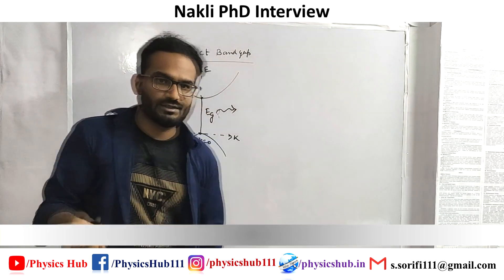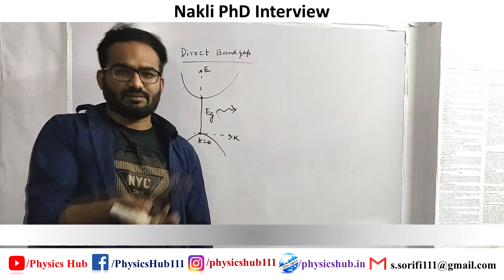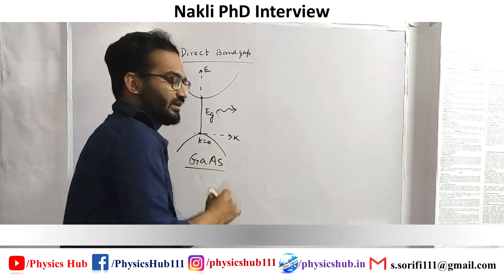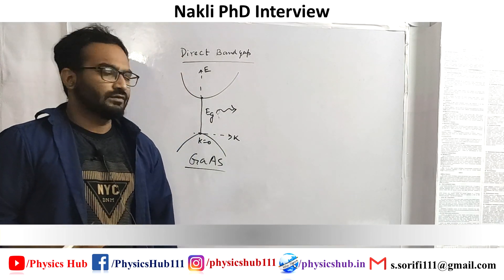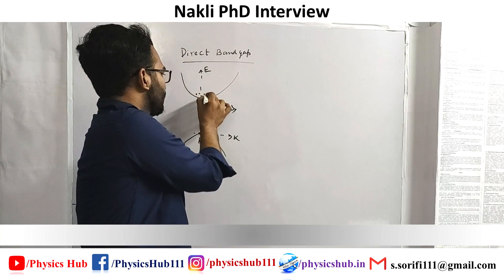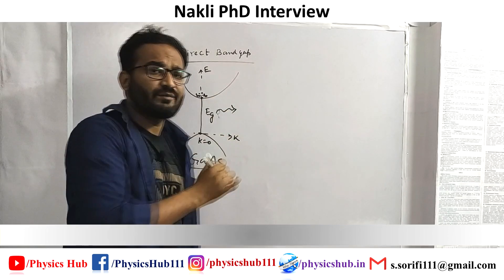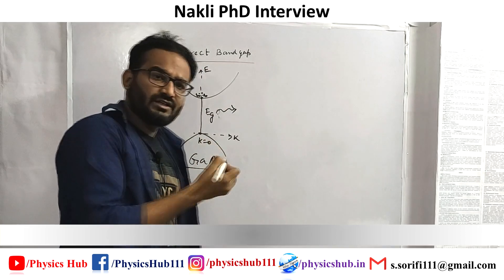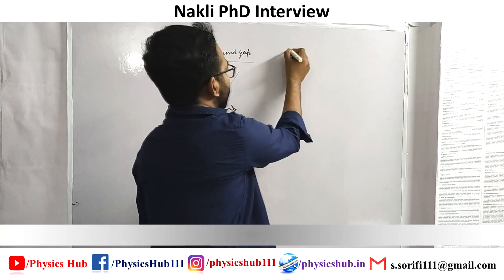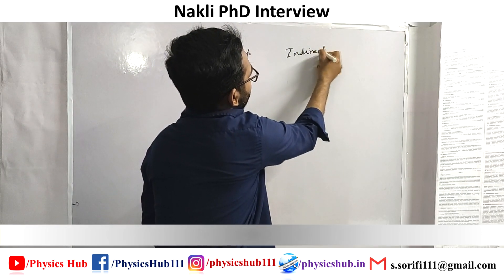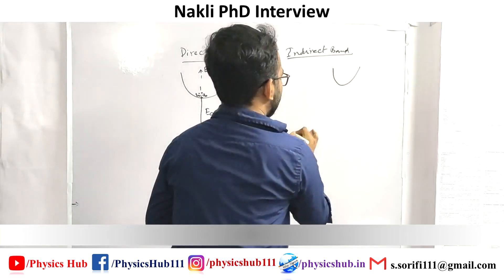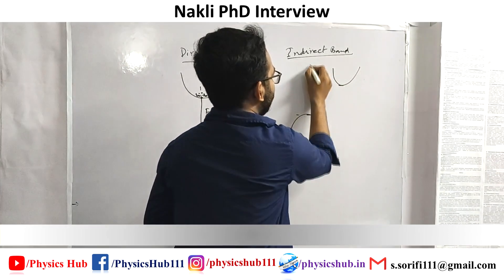So a photon with energy equal to the band gap of the semiconductor is emitted. One such semiconductor is gallium arsenide — gallium arsenide is a direct band gap semiconductor. In a direct band gap semiconductor, electrons are gathered at the minima of the conduction band and holes are accumulated at the top of the valence band. In contrast, for an indirect band gap semiconductor, the conduction band minima and the valence band maxima do not occur at the same k value.